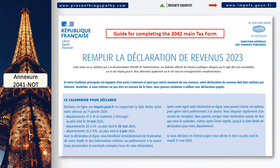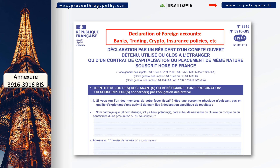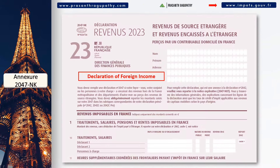The tax department also publishes a detailed guide 2041-NOT every year — you can use this guide to understand the main tax form 2042. You must add annexure 3916 if you have any foreign accounts with banks, brokerages, crypto exchanges, insurance policies, etc. It has a guide at the end to help with completing the form. The annexure 2047-NK must be added when you have any income from outside France. The annexure 2047 notes serve as a guide to complete the 2047-NK form, and it also lists the various tax credit percentages applicable to taxes paid in various countries.